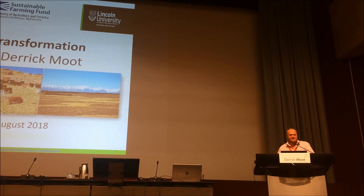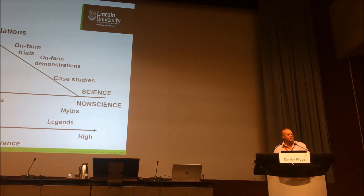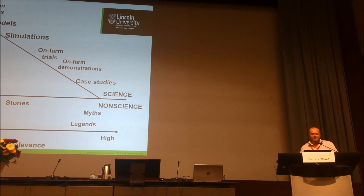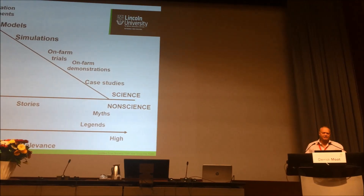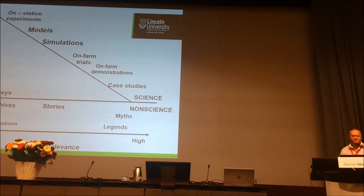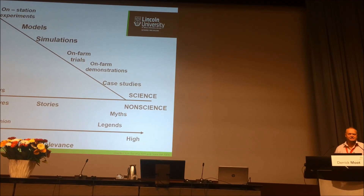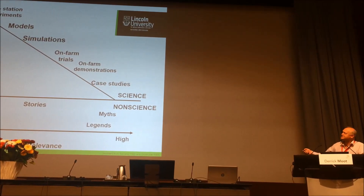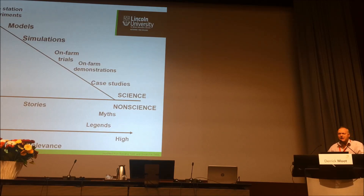What I want to talk about today is a lucerne transformation, but more importantly to give it as a model system of how you actually implement change on farm. It's very well having agronomic results, but I find this diagram quite useful when talking to people about how different parts of our research fit together. A lot of the stuff I do is with PhD students who have to publish, so they need to do on-station experiments and get very good data, but that has very low currency in relevance when you go and talk to a farmer.